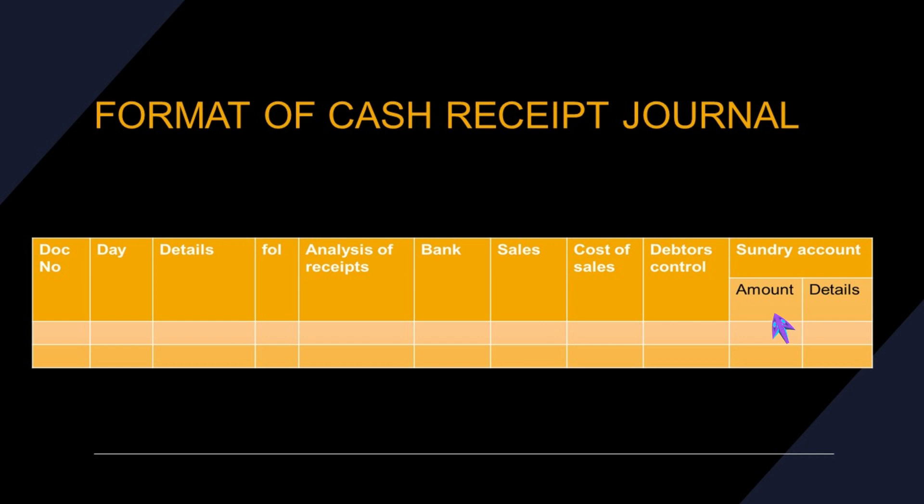The sundry account column was created for transactions that do not have their own specific column. For example, if we have a transaction about sales and this format has a column for sales, then we just use that column. But if we don't have a column for a particular transaction type, then we use the sundry account.